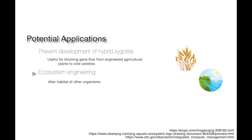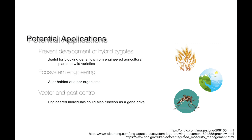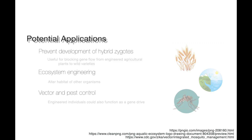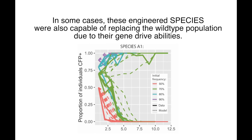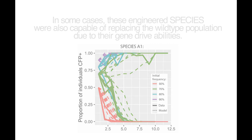Engineered species have varied applications, such as blocking gene flow from engineered agricultural plants to wild varieties, altering the habitat of other organisms, and use in vector and pest control. In some cases, these engineered species are also capable of replacing the wild-type population due to their gene drive abilities.